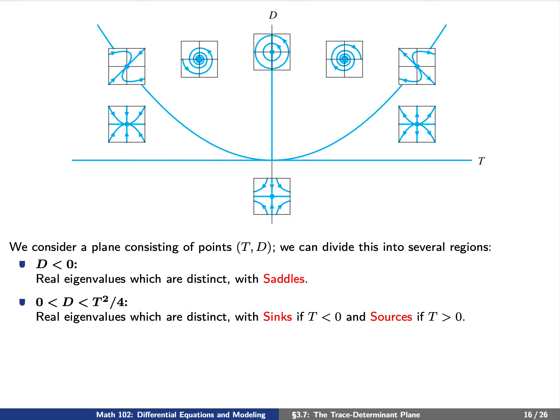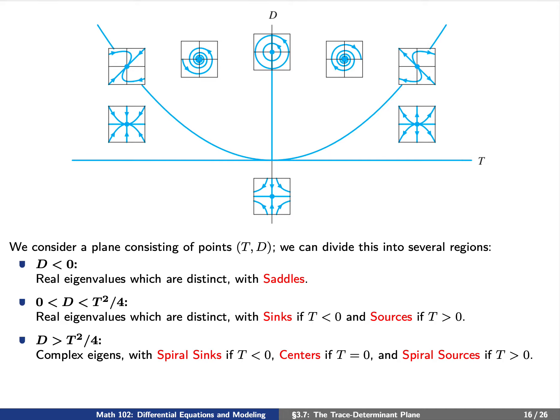Second, we consider the region just above the T-axis but below the parabola — that is, 0 < D < T²/4. In this case we have real eigenvalues that are distinct: sinks if T is negative, and sources if T is positive. Next, we consider the region above the parabola — that is, D > T²/4. In this case we have complex eigenvalues: spiral sinks if T is negative, centers if T equals zero, or spiral sources if T is positive.